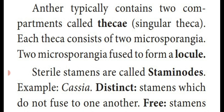These two microsporangia are fused to form a chamber known as locule, or a cavity known as locule. So inside the anther they are having two compartments known as theca. Each theca consists of two microsporangia. These two microsporangia are fused to form a chamber or cavity known as locule.